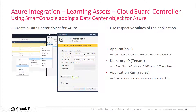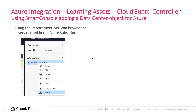Then we create a CloudGuard Controller object for Microsoft Azure, which is the tree that you see here. You go to Server, Data Center, Microsoft Azure, and then you come to this window. You take the application ID, the tenant ID, and the shared secret, and then you are done.